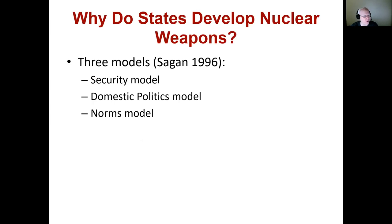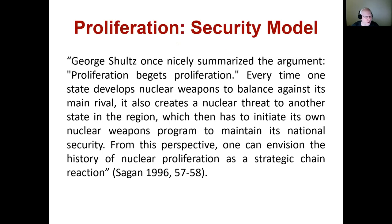So why do states develop nuclear weapons? There are three models that Sagan developed: a security model, a domestic politics model, and a norms model. Starting with the security model — George Shultz once summarized the argument: proliferation begets proliferation. Every time one state develops nuclear weapons to balance against its main rival, it also creates a nuclear threat to another state in the region, which then has to initiate its own nuclear weapons program. From this perspective, one can envision nuclear proliferation as a strategic chain reaction. One state feels insecure, it develops nuclear weapons; that state's rival now feels insecure, so it develops nuclear weapons of its own.